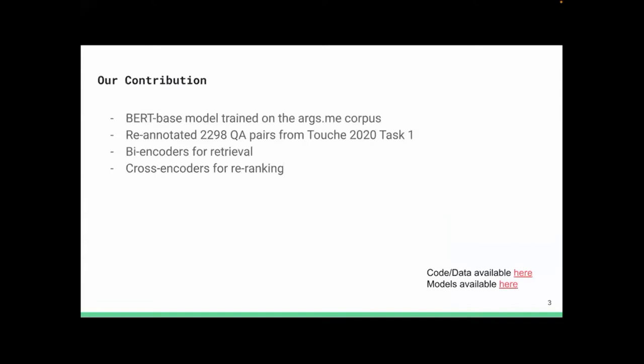I want to talk about our contribution here. We trained a BERT-based model on a masked language modeling task on the entire corpus, which we have released on Hugging Face already. We also re-annotated the question-answer pairs that were given to us by the organizers, because we found some issues with them. We also released some bi-encoders for retrieval and cross-encoders for re-ranking — all of these are available if you want to use them.